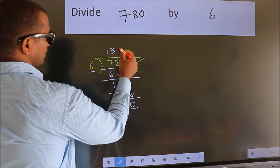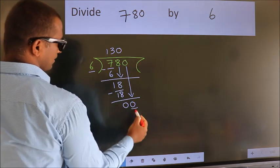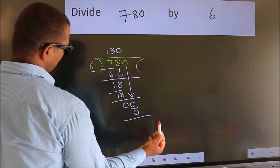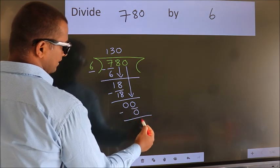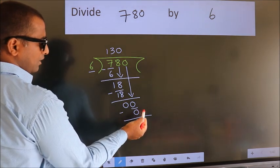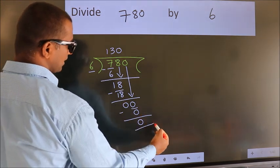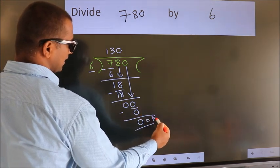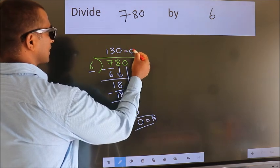In 6 table. 6 times 0 is 0. Now, we subtract. We get 0. No more numbers to bring it down. So, we stop here. This is our remainder. This is our quotient.